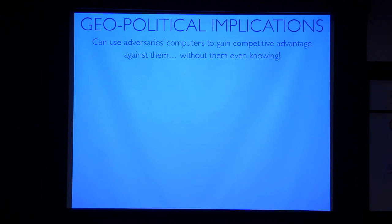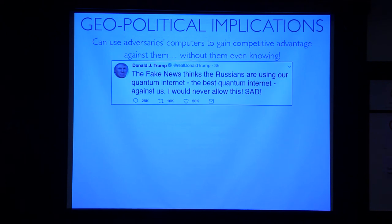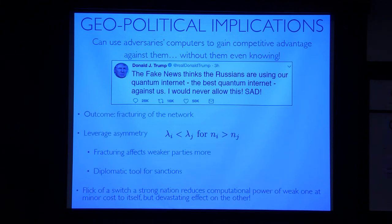There are also big geopolitical implications, because now we're in a situation where I can rent out compute time to use on someone else's computer and potentially use it against them, because I can do homomorphic encryption—they wouldn't even know. So here's what might happen: a Russian bedroom hacker who has very limited resources will outsource Shor's factoring algorithm to United States servers, use the computation to hack United States financial systems. The Americans won't even know, and then he'll get the results back. It's a very adversarial thing to do. Obviously the president has something to say about this: 'The fake news thinks the Russians are using our quantum internet—the best quantum internet—against us. I would never allow this! SAD!'